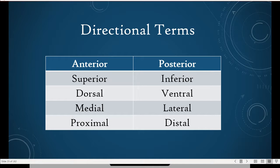We talked about directional terms: anterior means front, posterior means back. We compared those to dorsal and ventral — dorsal meaning back (think of the dorsal fin) and ventral meaning front — though those terms are mostly used in animal physiology. Superior means above and inferior means below — pretty simple, like thinking of a supervisor being above.